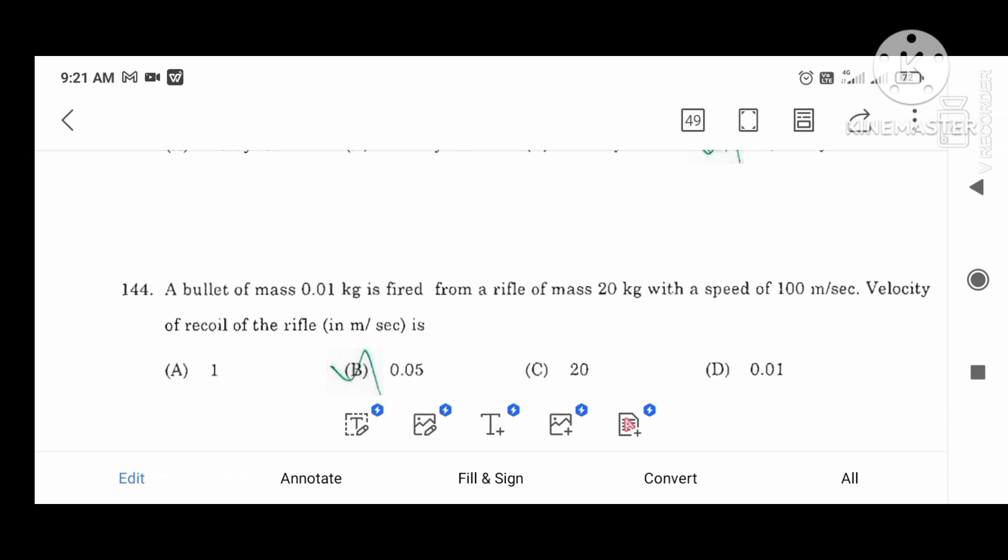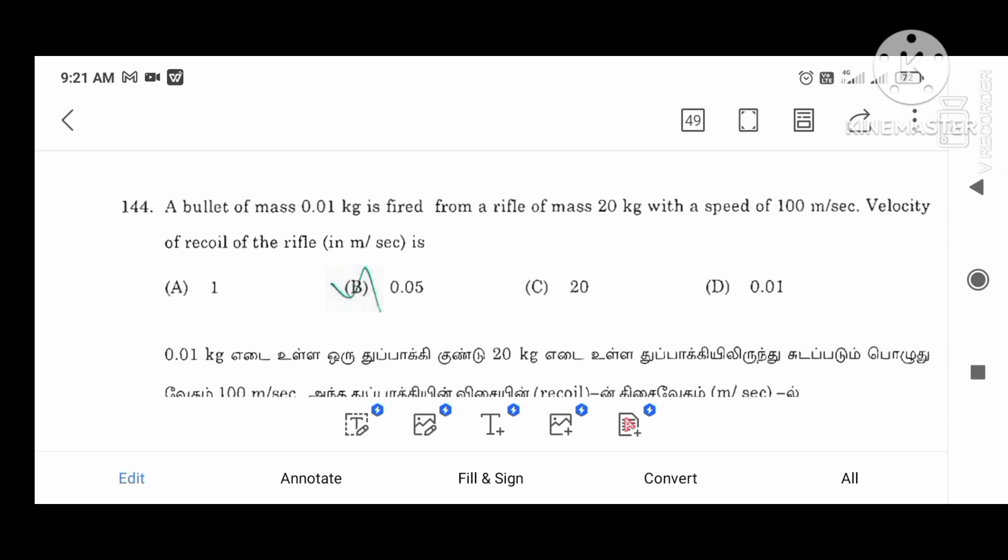The bullet of mass, that's a weight, fire from the rifle. Mass 20 kg with speed. 100m. Second velocity of, that's the velocity of 0.05.